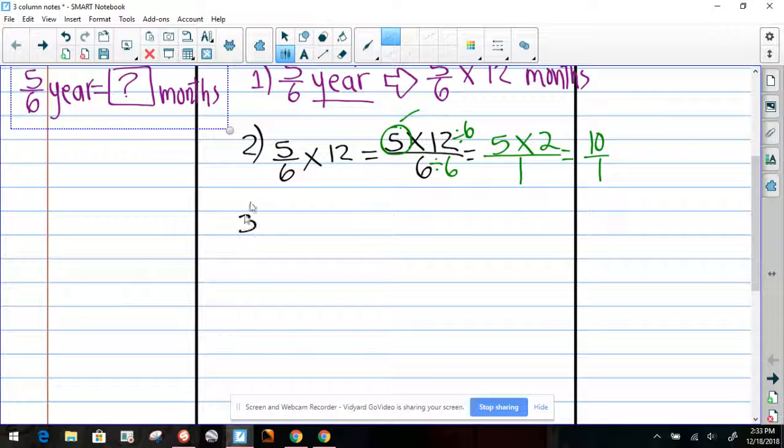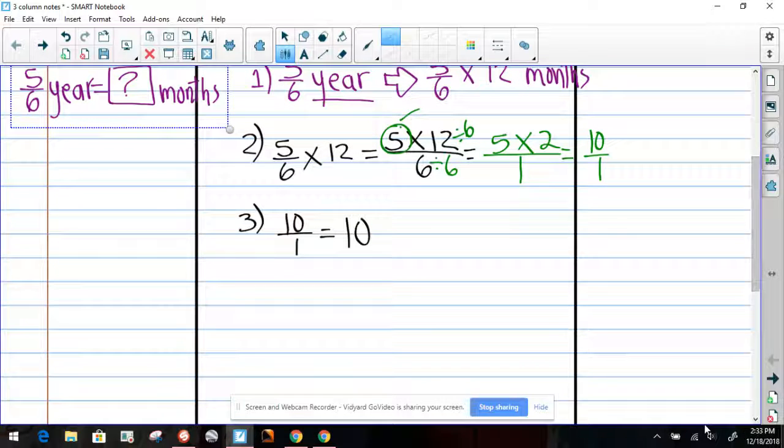Okay, now let's do step number three. We have ten over one. Ten divided by one equals ten. So now we can answer the question and we're going to rewrite it in the box. Five-sixths of a year equals ten months.